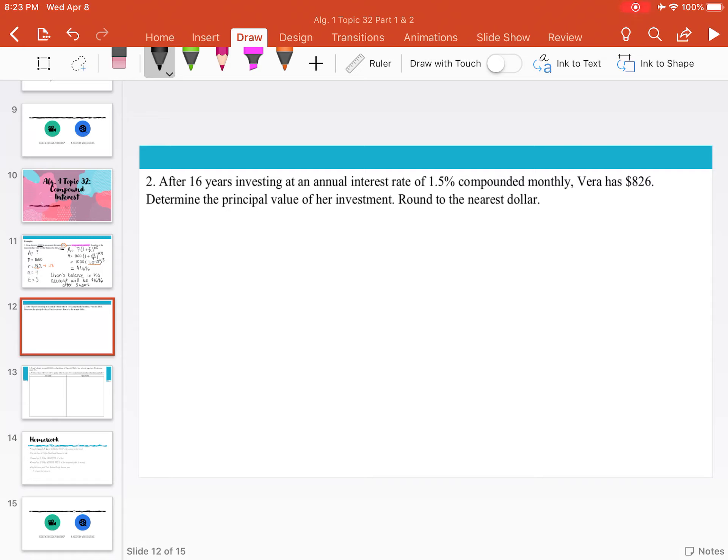Moving on to the next example. After 16 years investing at an annual interest rate of 1.5% compounded monthly, Vera has $826. Determine the principal value of her investment and round to the nearest dollar.